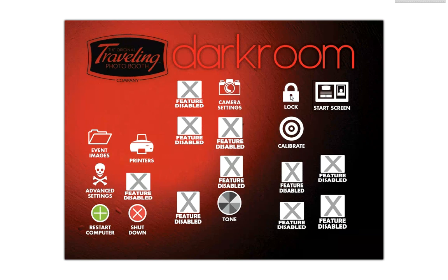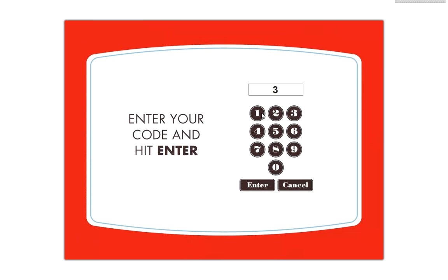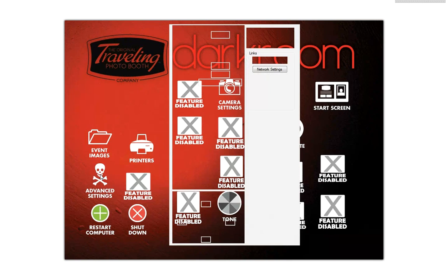If you want to turn it on but you don't want people using it, you can go ahead and put it to the lock screen. Then tap upper right, lower right, enter in your code — 3115 — and that takes you to your icon screen.